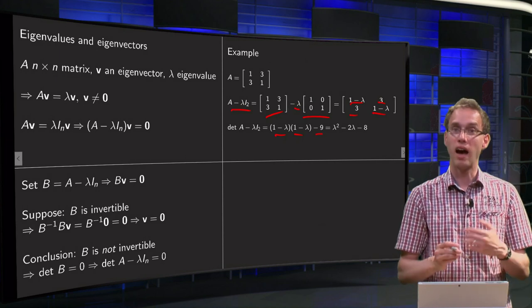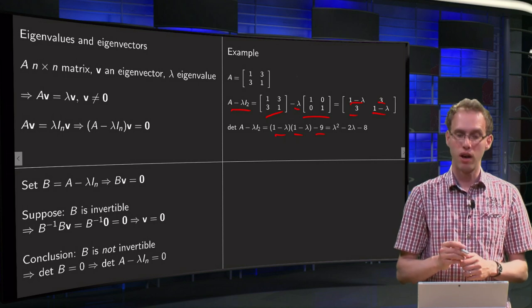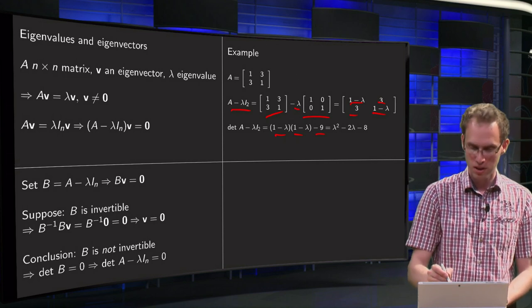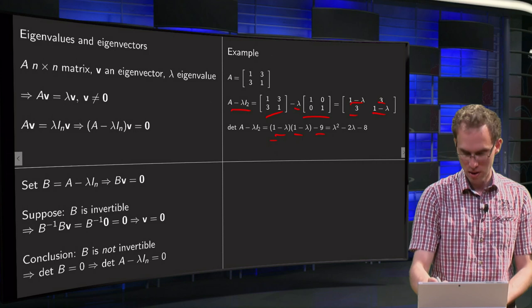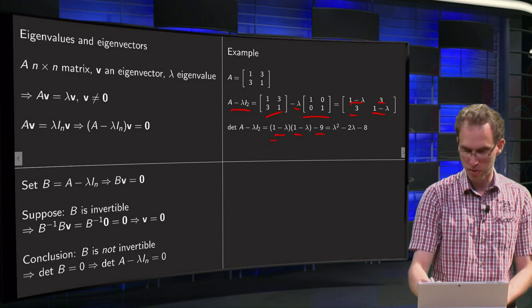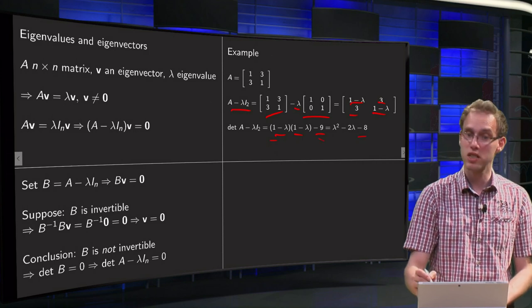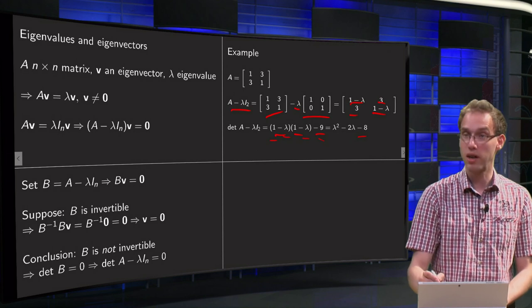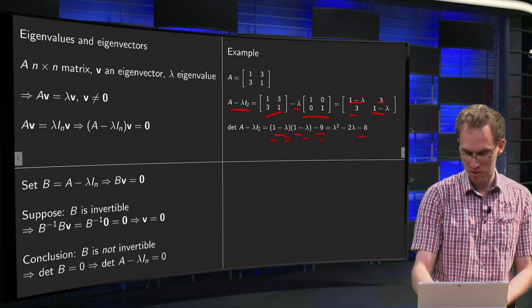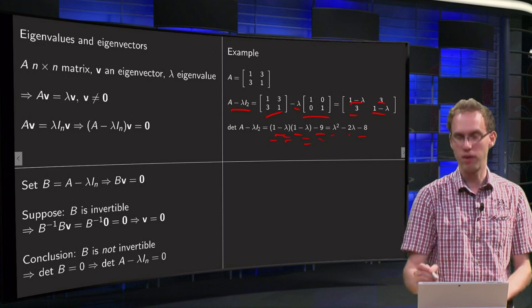So there we are. And if you want, you can work out the brackets. You get 1 times 1 is 1, 1 minus 9 equals minus 8, minus lambda minus lambda is minus 2 lambda, and lambda times lambda equals lambda squared. So there we are.